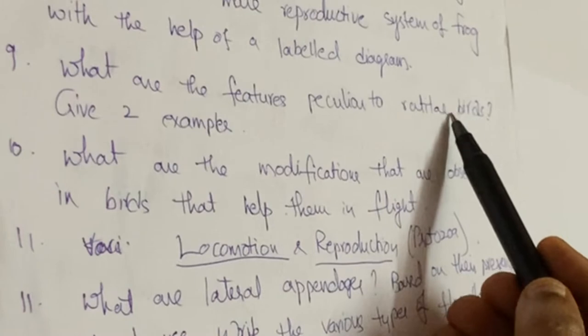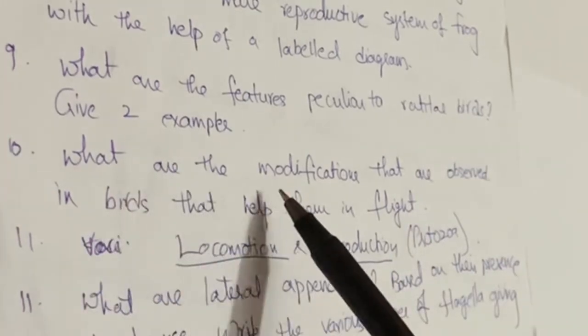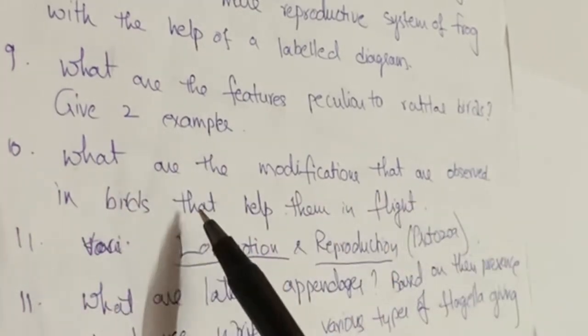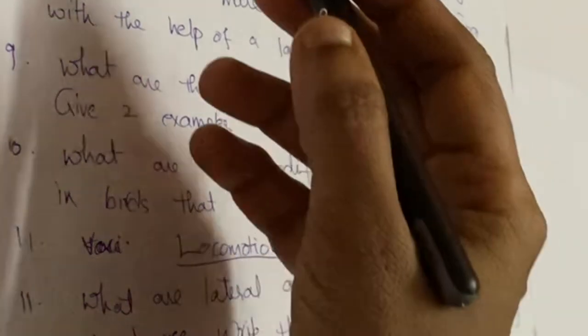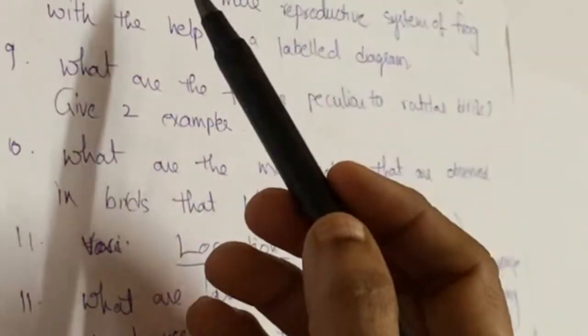The next one is: what are the features peculiar to ratite birds? Give examples. What are the modifications observed in birds? Flight adaptations of birds is also very important. From these two chapters, the first and second chapter, you will definitely get one four-mark question.